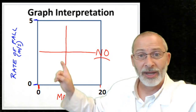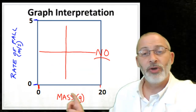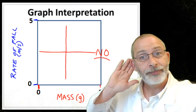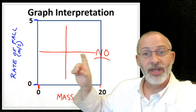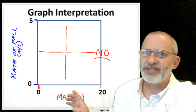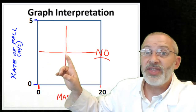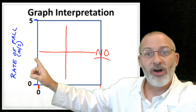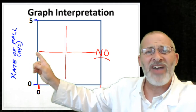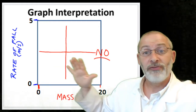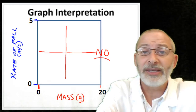Think about that by looking at the horizontal line. As you move from left to right, what happens to the value of mass? It increases. So mass is changing. But if mass changes, will there be a change in the rate of fall? Look at the horizontal line — is there any change in the rate of fall? No, because a flat line indicates the same value every time. So if you get a line like this, you can say there is no relationship between mass and rate of fall.